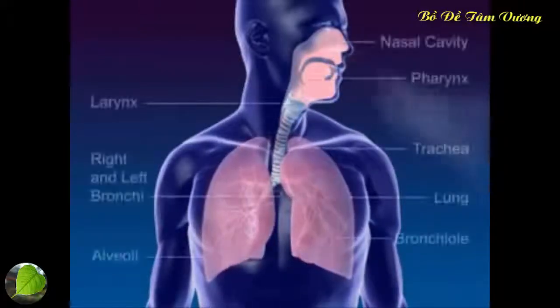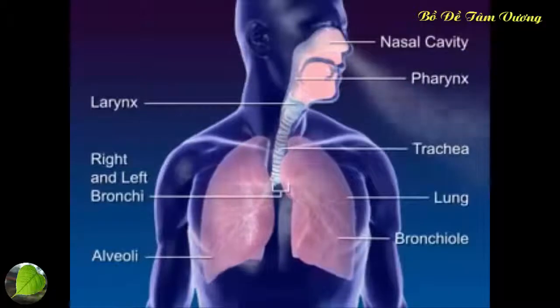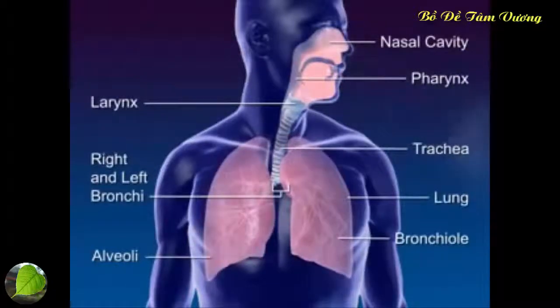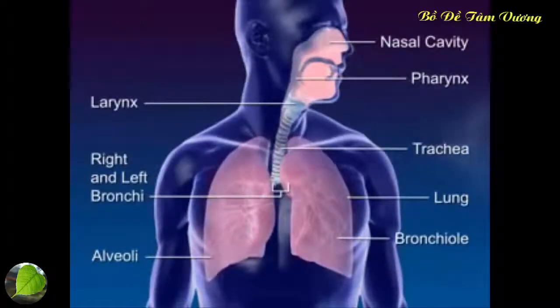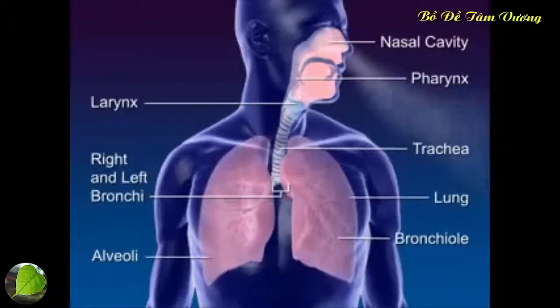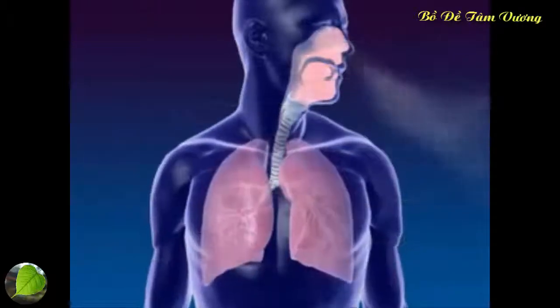The respiratory system moves air through the nose, pharynx, larynx, trachea, and bronchus to the alveoli, where the gas exchange between oxygen and carbon dioxide occurs.